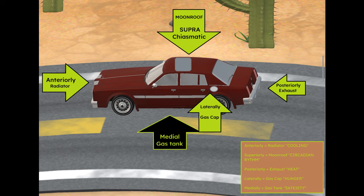Hi, so this is the visual mnemonic I use for memorizing the functions of the hypothalamus. The car here is representing the hypothalamus as a whole, and the front of the car is the anterior, the rear is the posterior, the side closest to us is the lateral, in the center there is the medial, and on top here is the suprachiasmatic. So let's go around the car and see which ones we can memorize.